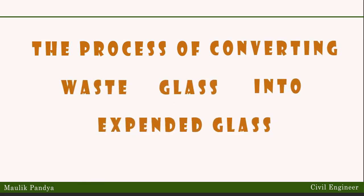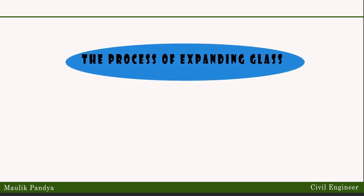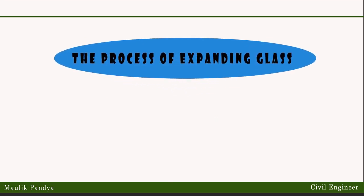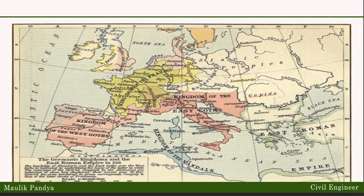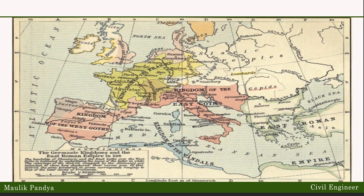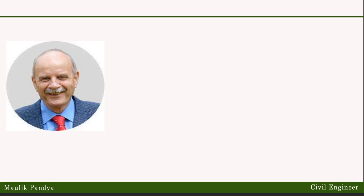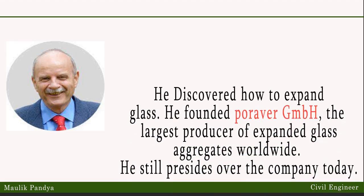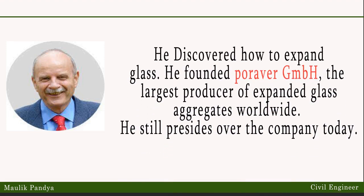The process of converting waste glass into expanded glass also creates two additional raw materials. After learning how to expand clay for his family's precast concrete business in the Bavarian region of Germany in the 1960s and 70s, Hans Veit Denner topped his game in the early 80s when he discovered how to expand glass. Subsequently, in 1983 he founded Poraver GmbH, the largest producer of expanded glass aggregates worldwide.